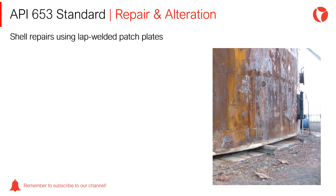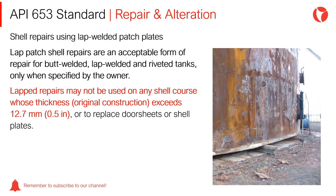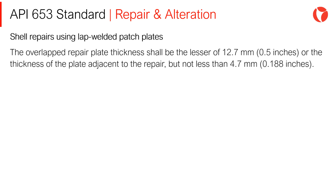Another alternative when it comes to repairing a tank wall are patch plates. Lap patch shell repairs are an acceptable form of repair for butt-welded, lap-welded, and riveted tanks, only when specified by the owner. Lapped repairs may not be used on any shell courses whose thickness exceeds 12.7 mm, or to replace door sheets or shell plates. The repair material must meet the requirements of the current standard and API 653. The overlapped repair plate thickness shall be the lesser of 12.7 mm or the thickness of the plate adjacent to the repair, but no less than 4.7 mm.